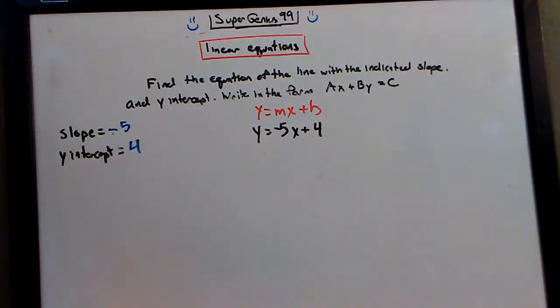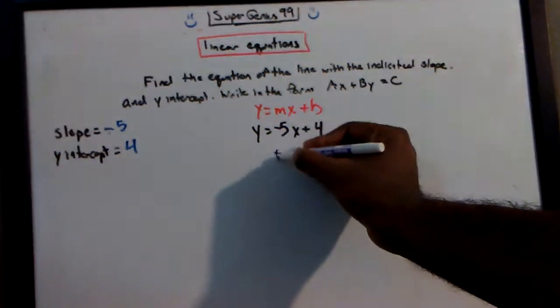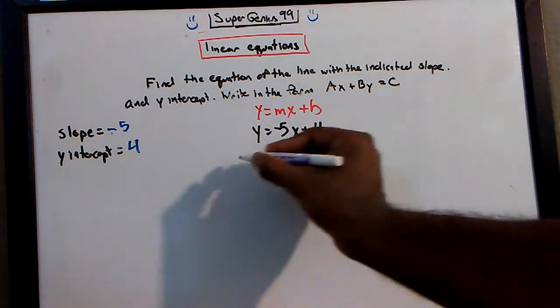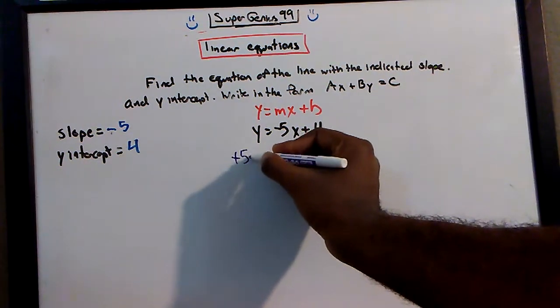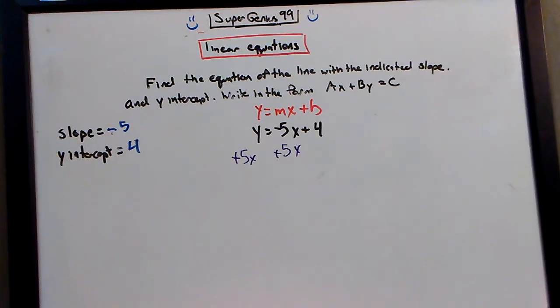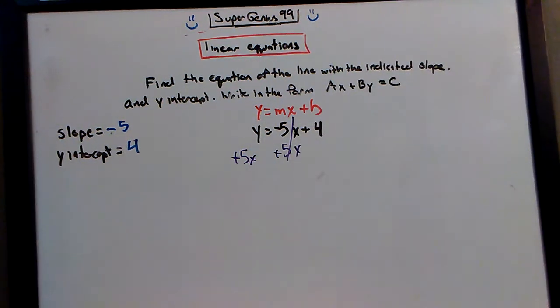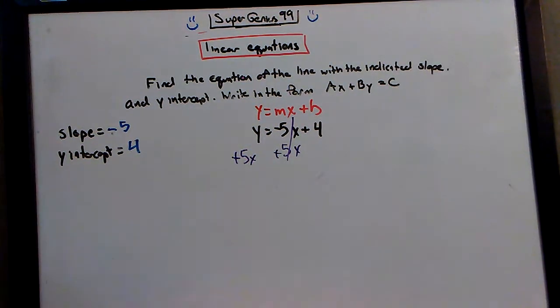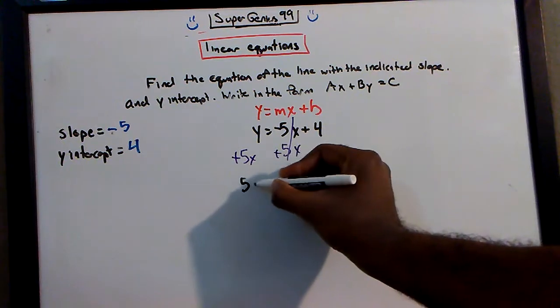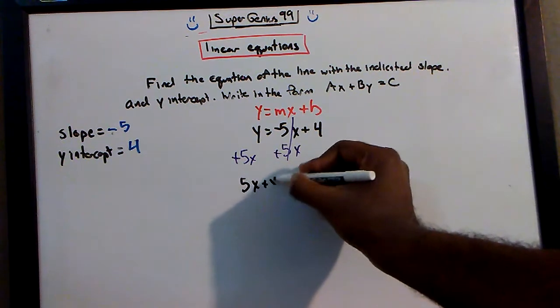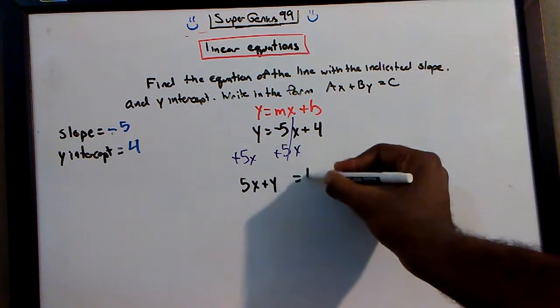What will we do to bring the x over? What do we need to do to bring the x over? You add 5x to both sides. Some of you like to see me work out the arithmetic. So add 5x to both sides, this cancels.